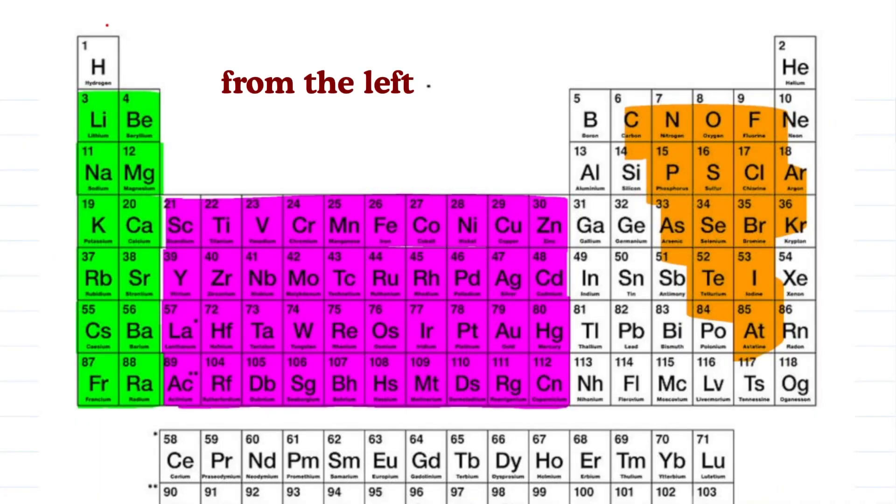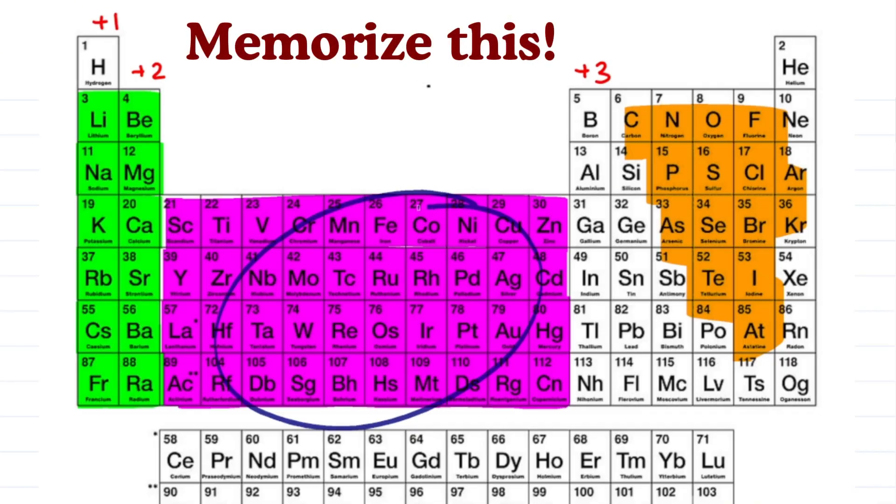From the left you get plus 1, plus 2, and plus 3. We skip the transition metals because those don't follow a pattern. From the right we go negative: 0, minus 1, minus 2, minus 3.